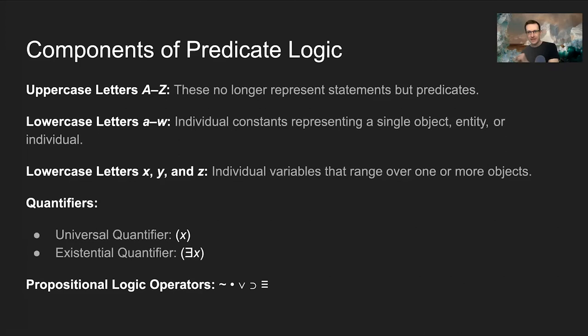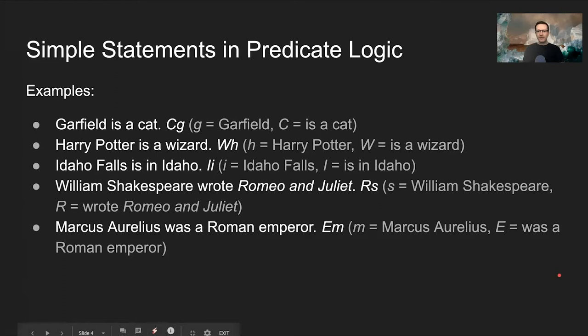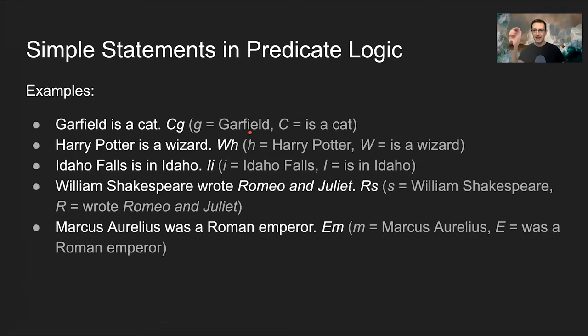Let's talk first about simple statements in predicate logic. Simple statements are statements that have a subject and a predicate. Here's a very simple example: 'Garfield is a cat.' We use the lowercase letter g to represent Garfield — that individual — and we use the uppercase letter C to represent the predicate, what we're saying about that individual, namely that that individual is a cat.